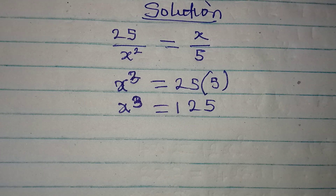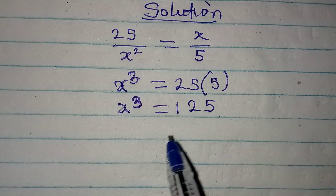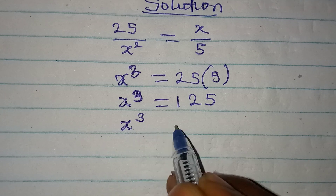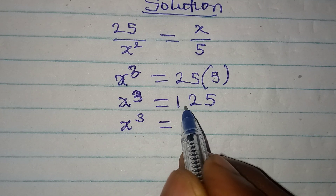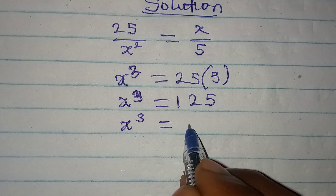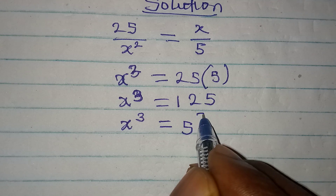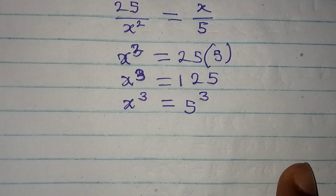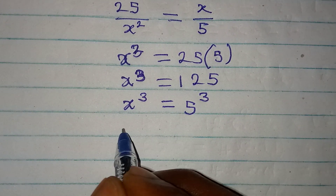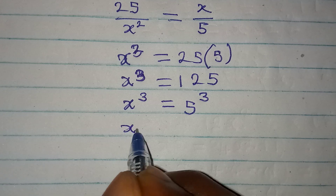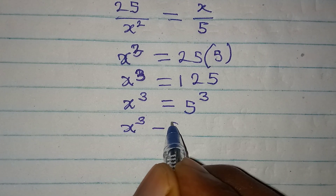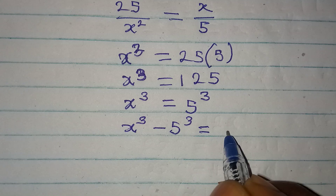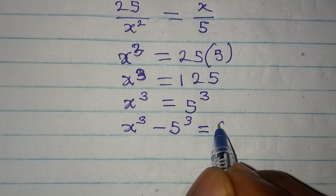That is, if I multiply 25 by 5, this is the same thing as x to the power of 3 equal to 125, which is the same as 5 to the power of 3. Now bring everything to the left hand side, so we have x to the power of 3 minus 5 to the power of 3 equals 0.